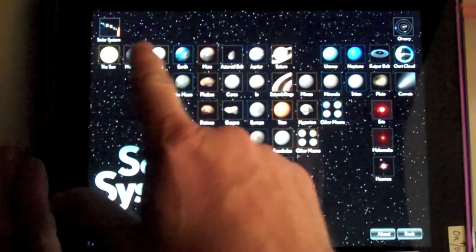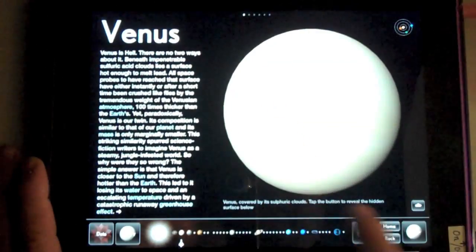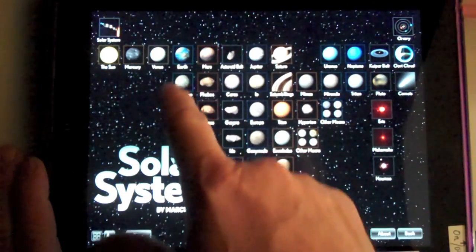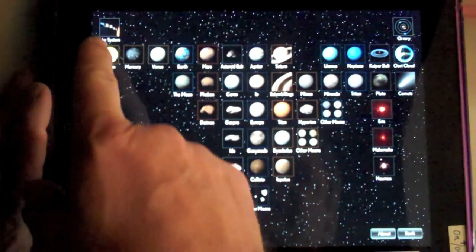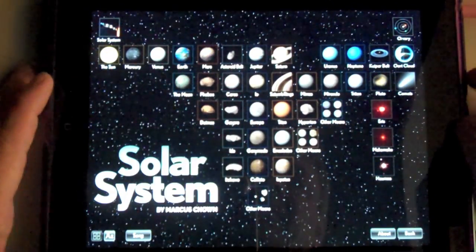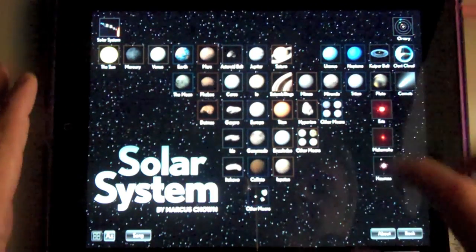Just like The Elements, I can touch any of these and jump to any planet I want to learn more about. You can see they're arranged here by order of the solar system with the moons going down.